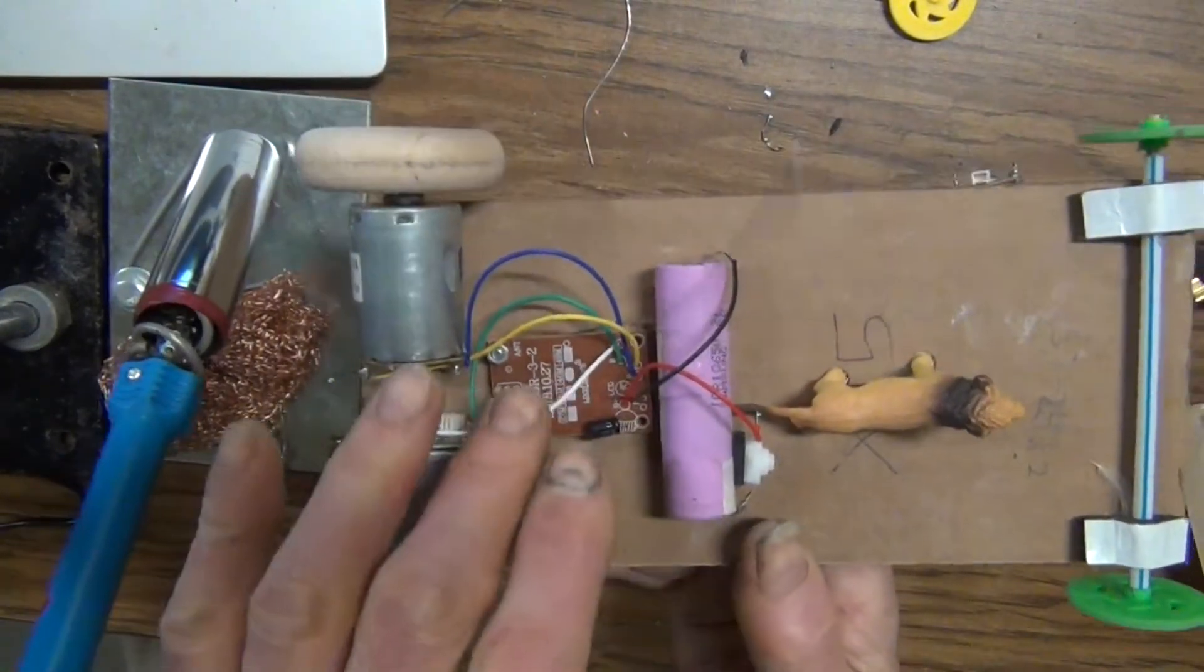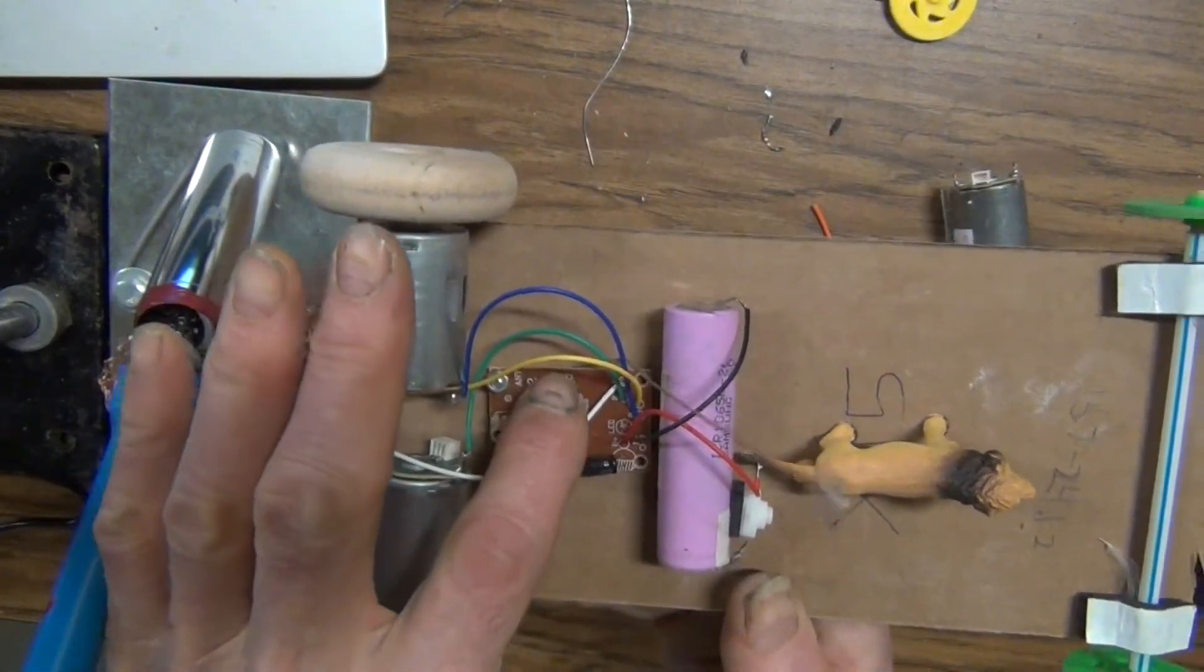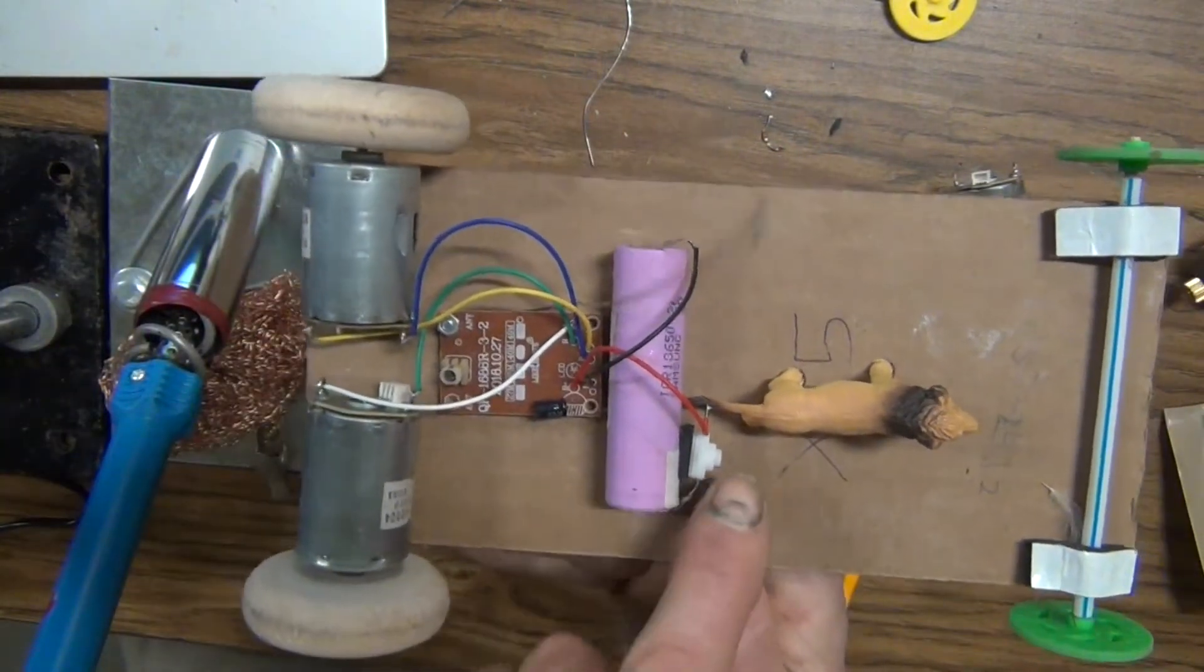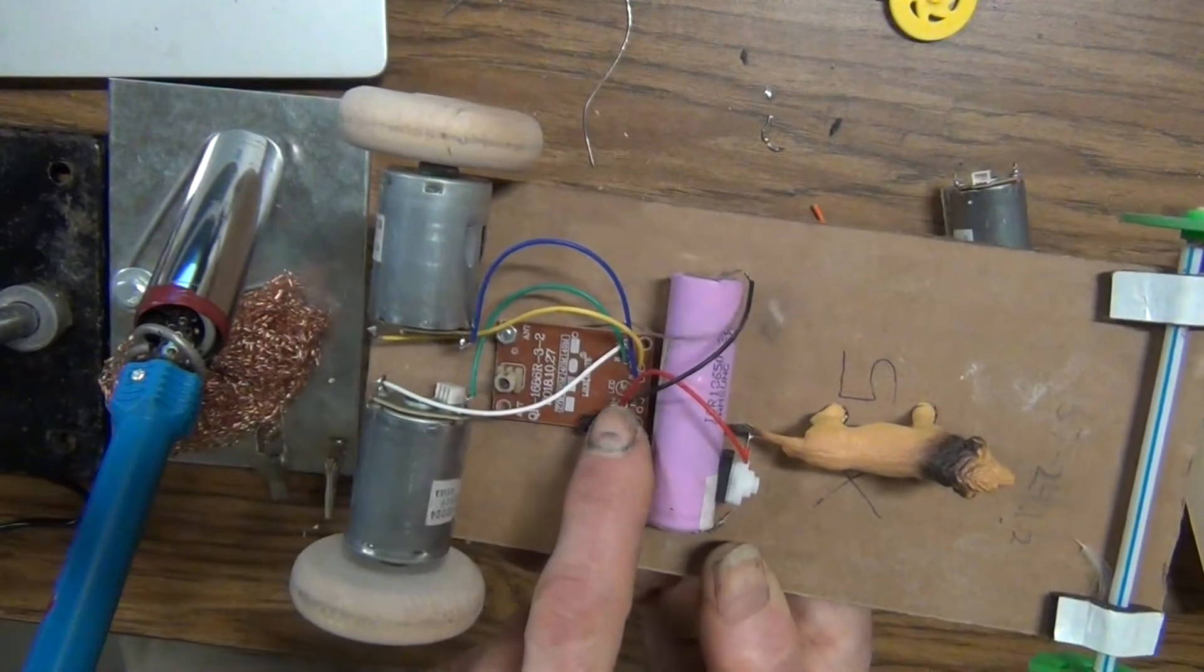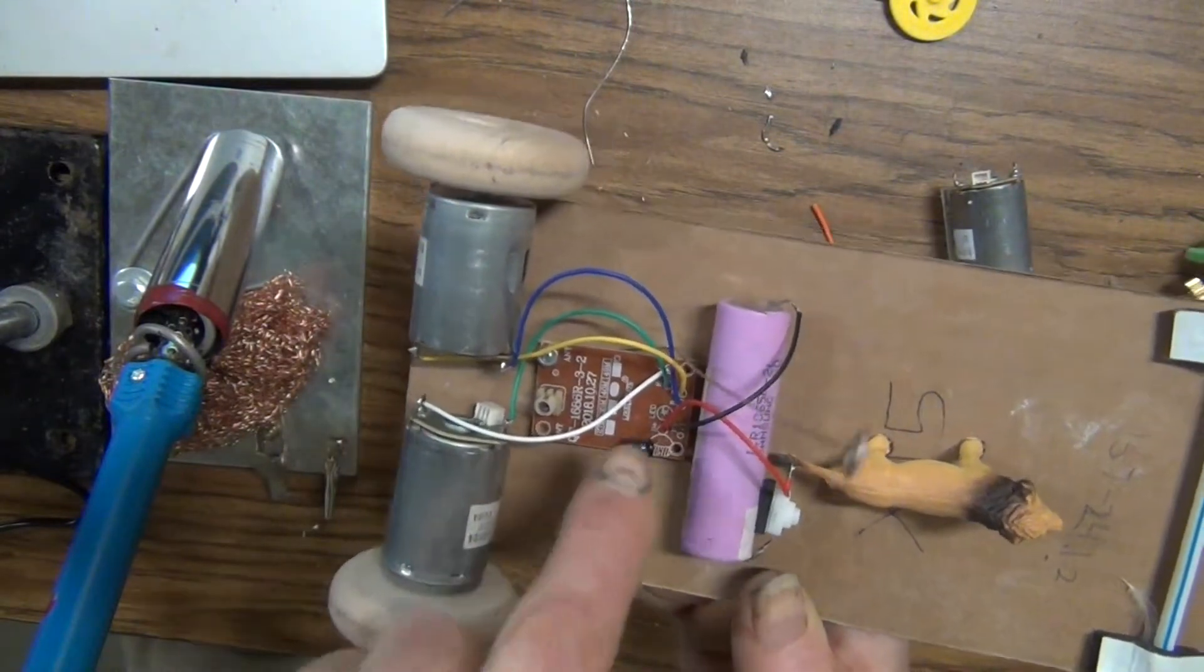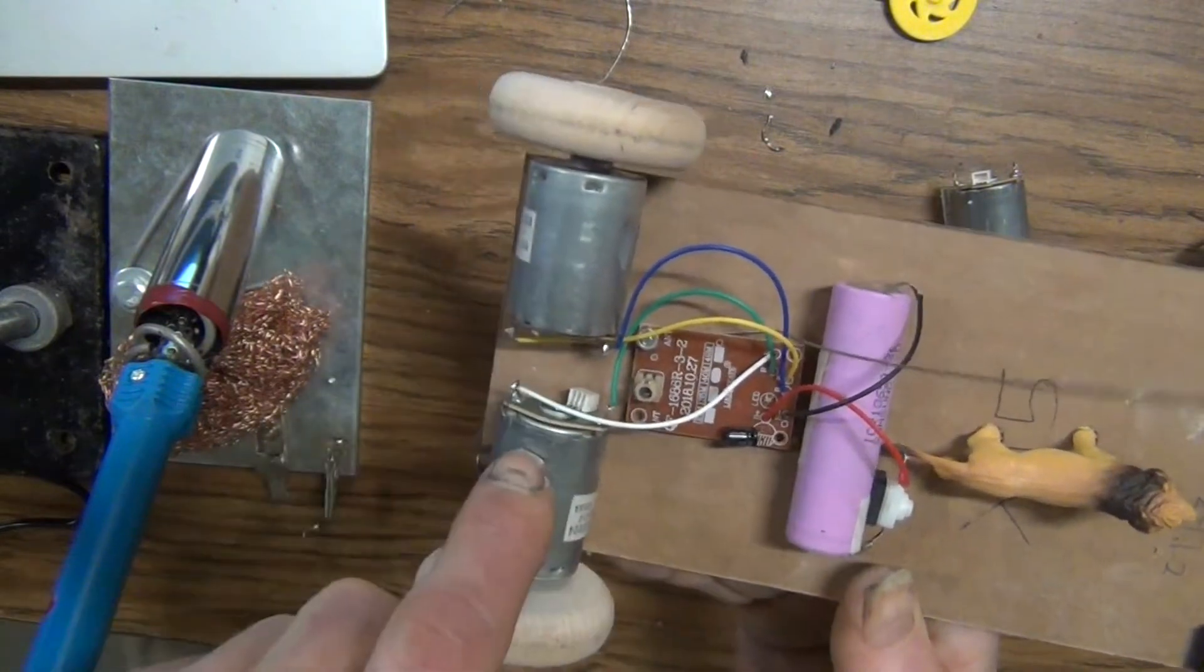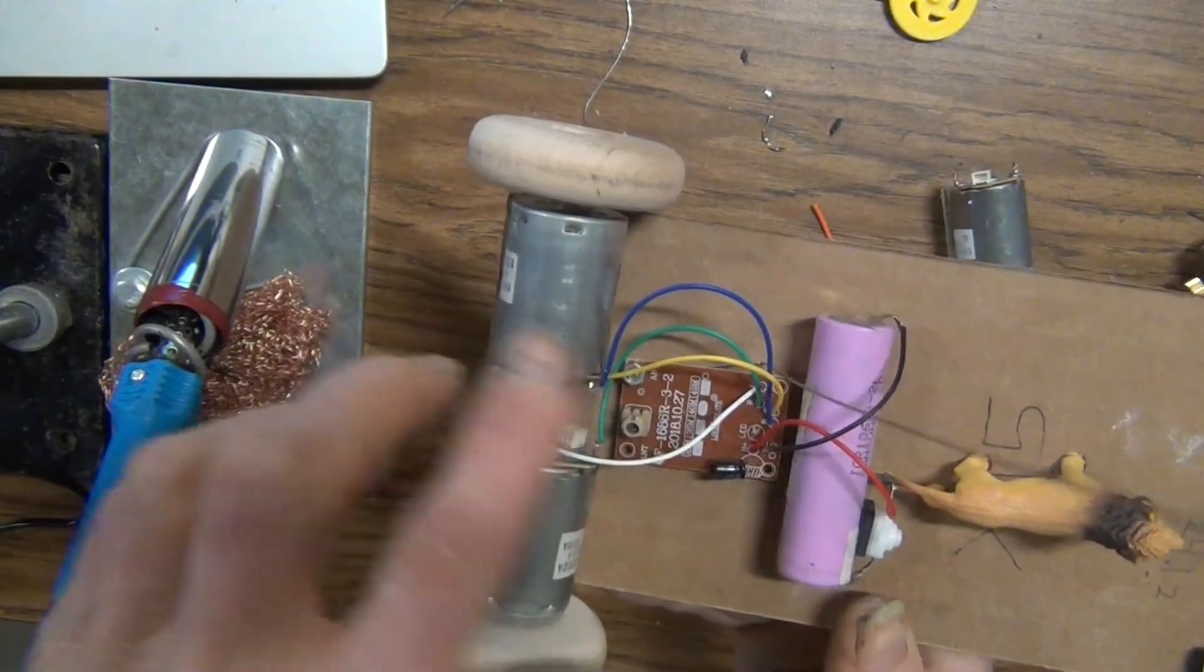It's got a receiver here that takes the information from the antenna, is powered by the battery with the switch, and then it sends four different currents out to the motors back here, and makes them either go forward or backwards.